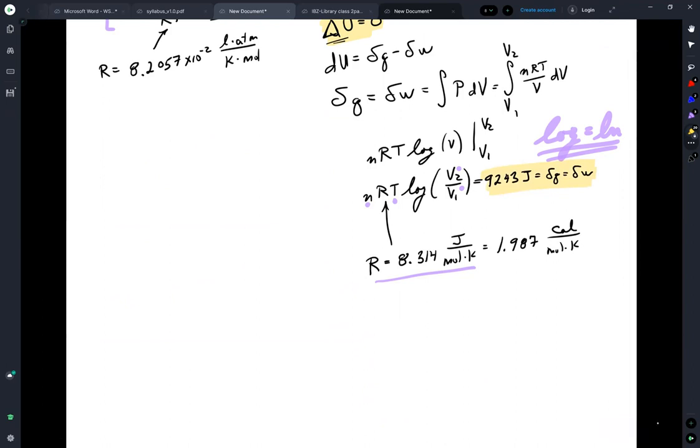And if you do this and you make your substitutions, you wind up with 9243 joule is equal to dQ is equal to dW. Okay, so we got the work and we got the heat flow, but none of that energy is stored in the system. It comes in and it goes out.